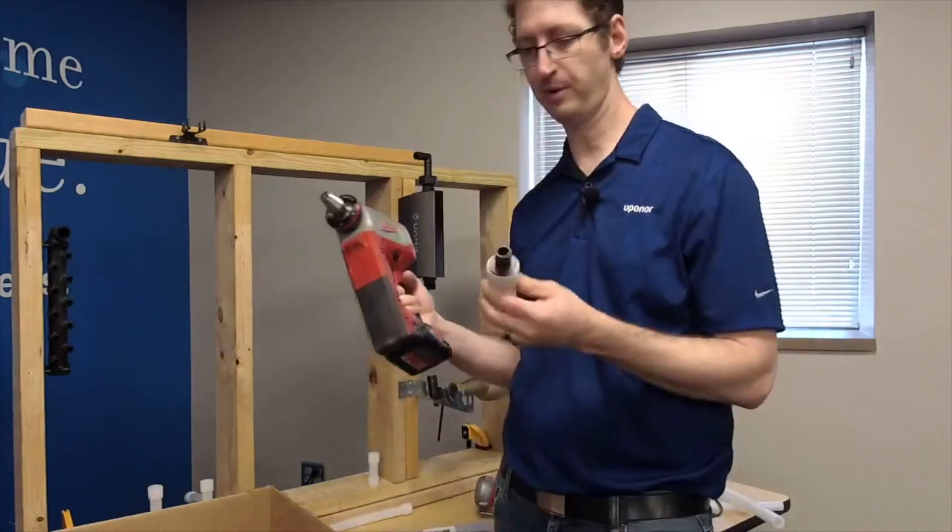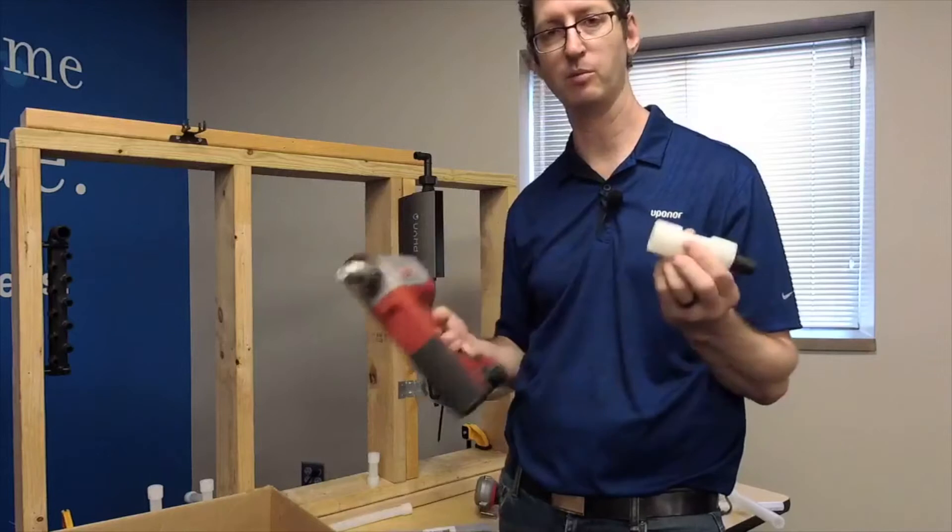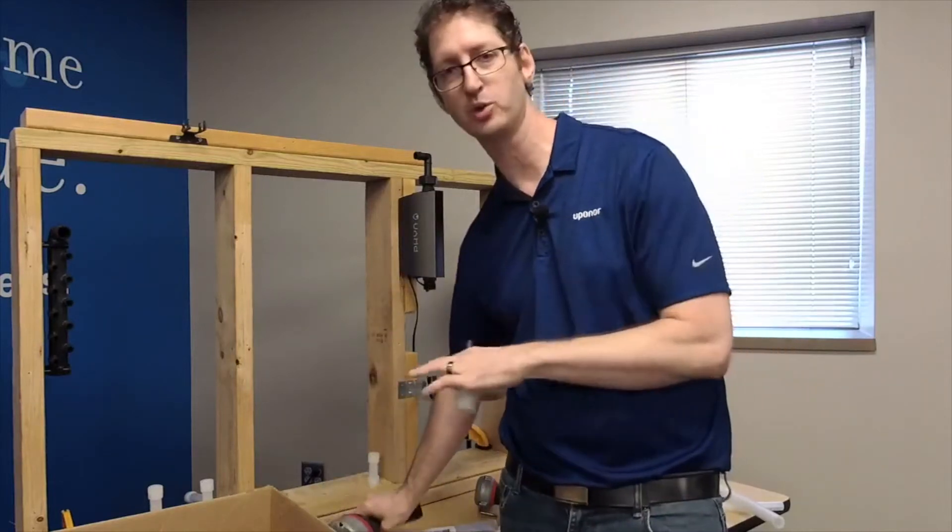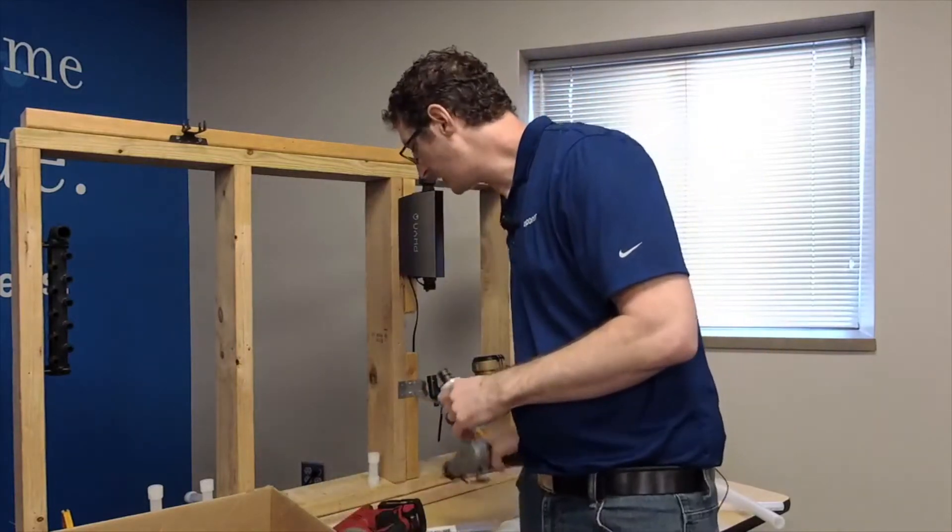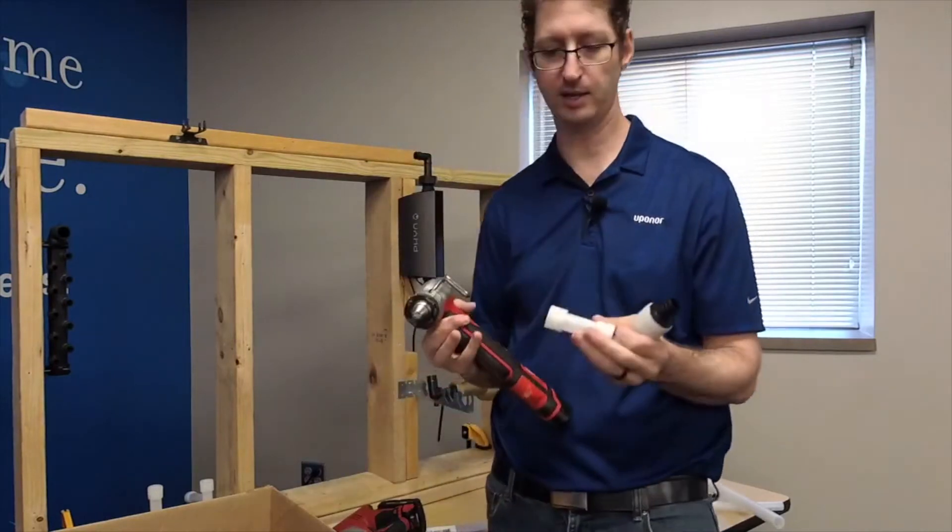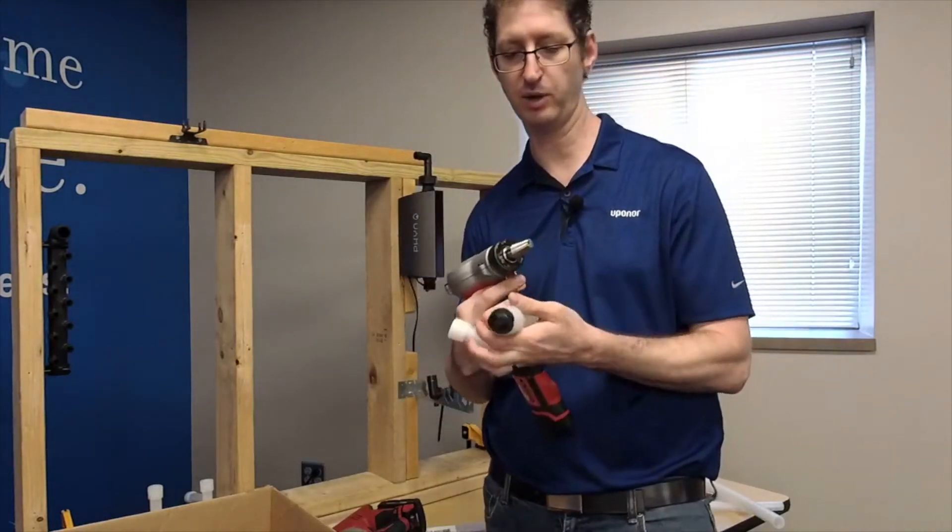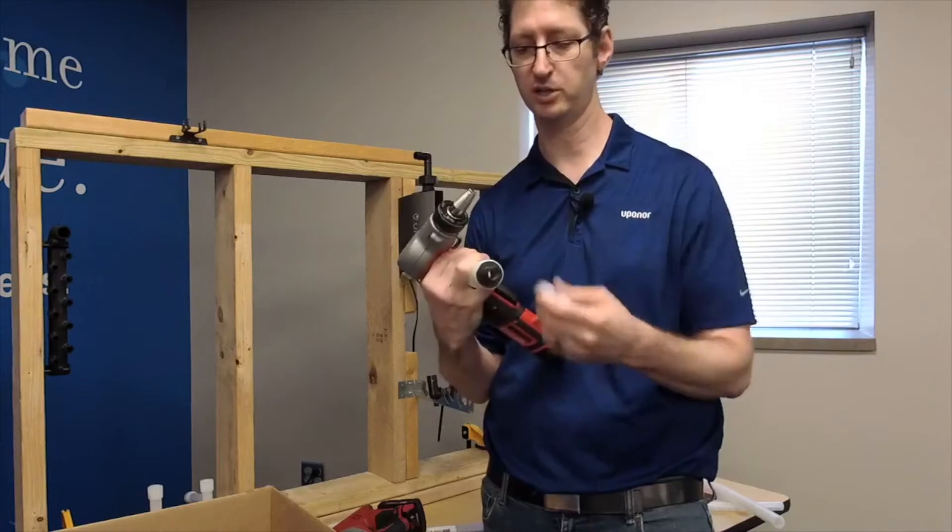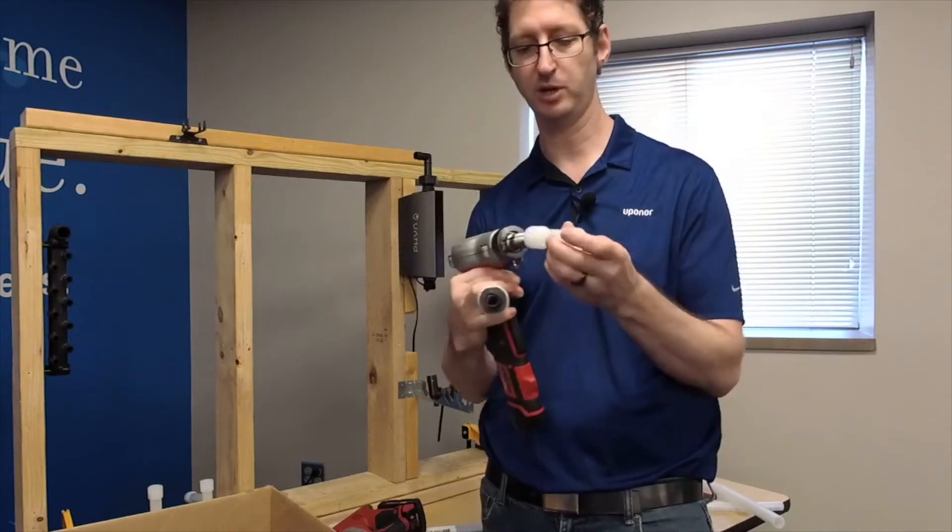All right, so now I'm pretty much done with my one-inch connections. I've got one more that needs to go to the water meter so I won't put this tool away. I've got to use it again, but I'm going to take and connect my three-quarter inch pipe to this one-inch by three-quarter inch coupling. I'm going to do the same thing.